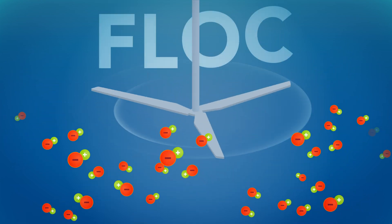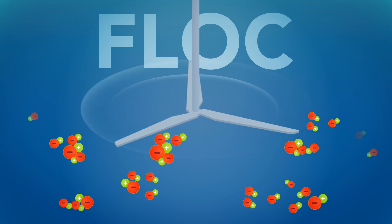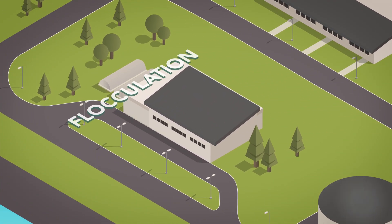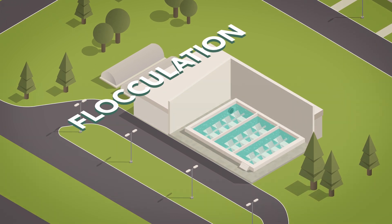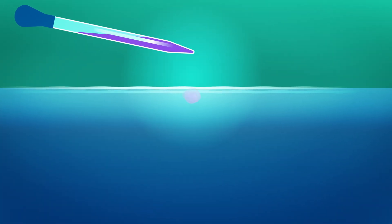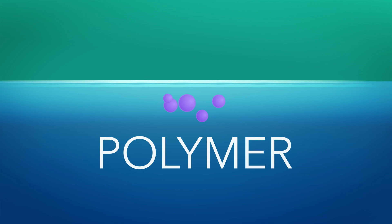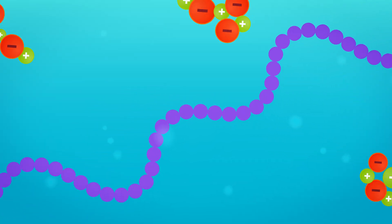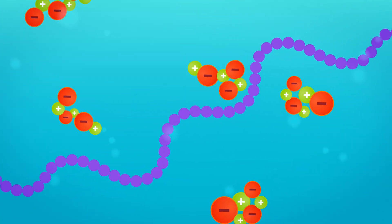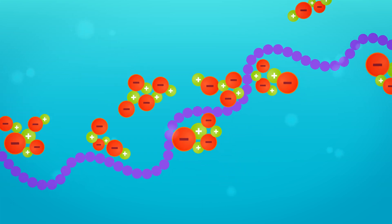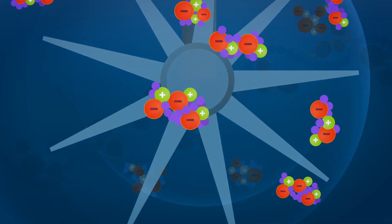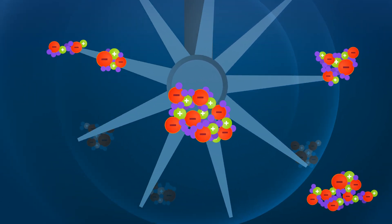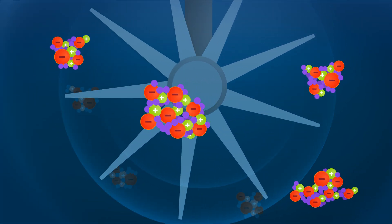These clumps of particles are called floc. The water then moves to the flocculation building. During the flocculation process, we add substances called polymers to the water. The polymers bind together with the floc to create larger chains of floc. The clumps flow through spinning paddles that help speed up the mixing process, and the floc clumps continue to get larger.